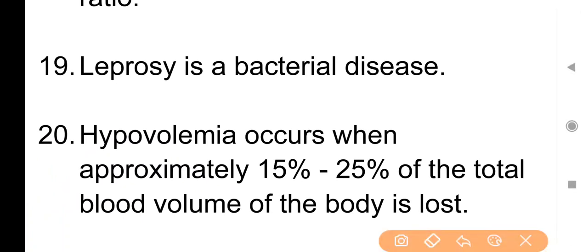Point No. 20: Hypovolemia occurs when approximately 15 to 25 percent of total blood volume of the body is lost. जब किसी person में किसी injury या किसी और कारण की वजह से शरीर का 15–25 प्रतिशत तक fluid loss हो जाए, तो यह condition hypovolemia कहलाती है।